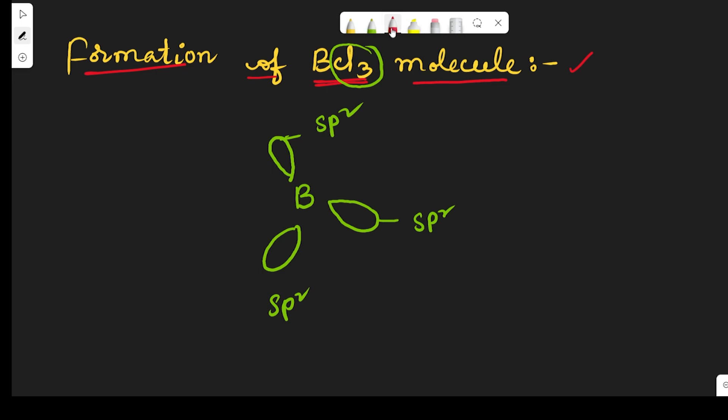Now these three hybrid orbitals are overlapping with the 3pz orbital of the chlorine atoms. By axial overlapping there exist three sigma bonds between the sp² hybrid orbital of the boron atom and the 3pz orbital of the chlorine atoms.